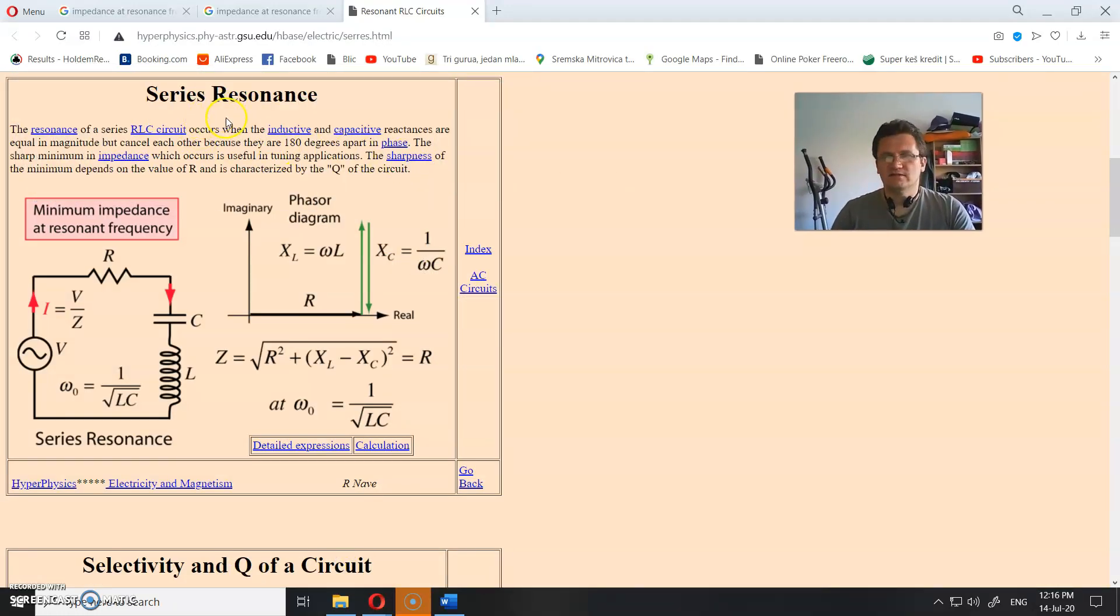This is the series resonance, the AC circuit. As you can see, this is impedance, this is inductance and capacitance - inductance for the coil, capacitance for the capacitor. In this case, as you can see, those two things cancel each other out. This is Hyperphysics, good site.